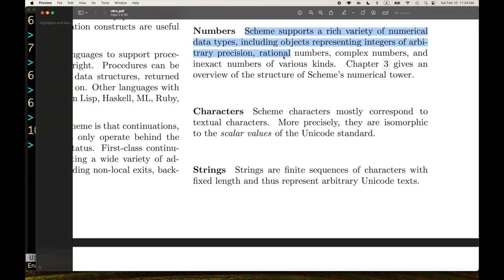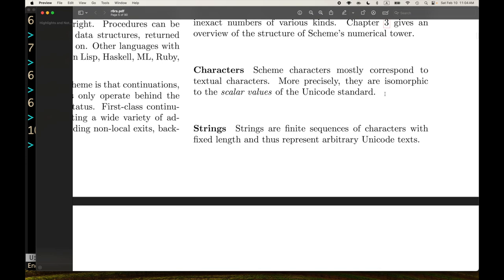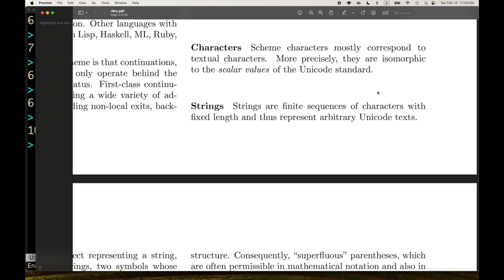Numbers. Scheme supports a variety of numerical data types, including objects representing integers of arbitrary precision, rational numbers, complex numbers, and inexact numbers of various kinds. Chapter three gives us an overview of the structure of Scheme's numerical tower. Complex numbers, I don't know if I've ever used those in anger in Scheme. I don't know, maybe once doing like some fractal stuff or something. I just haven't done much with it. I always have to look that one up. But the other types I've used.